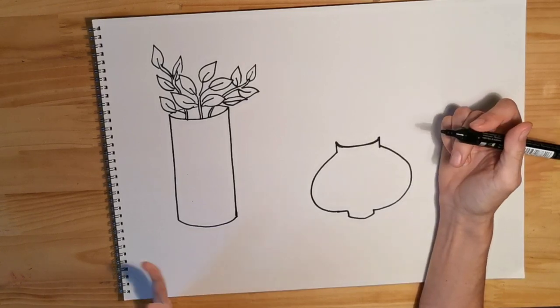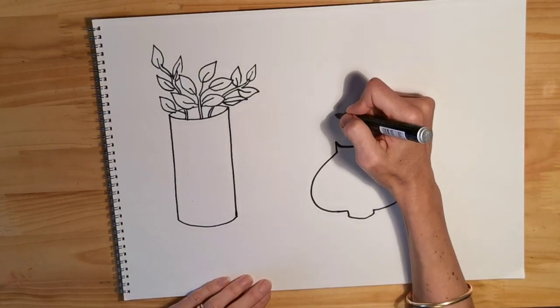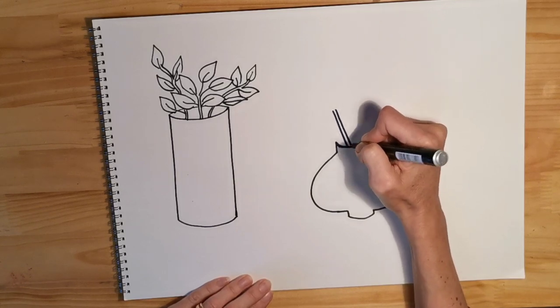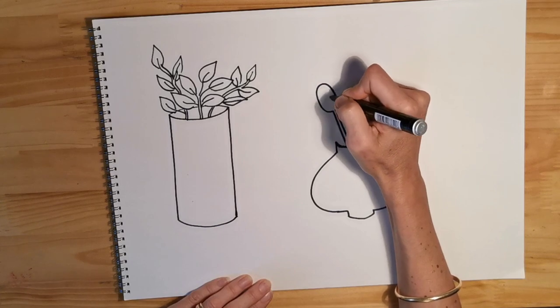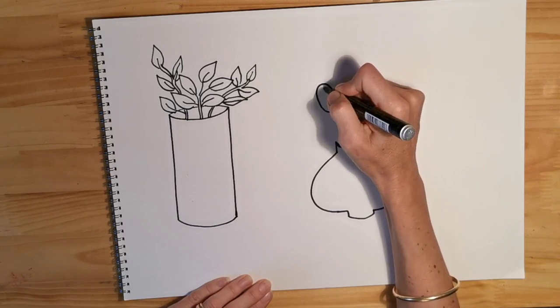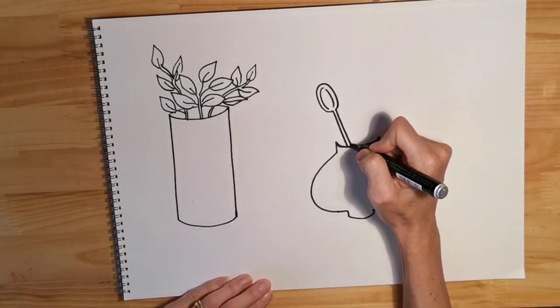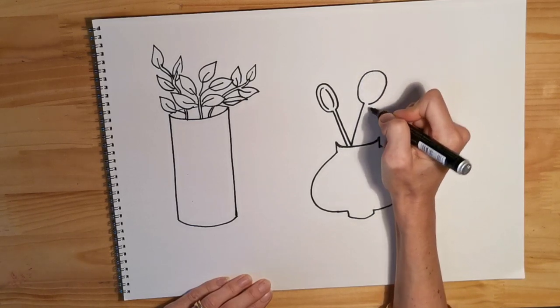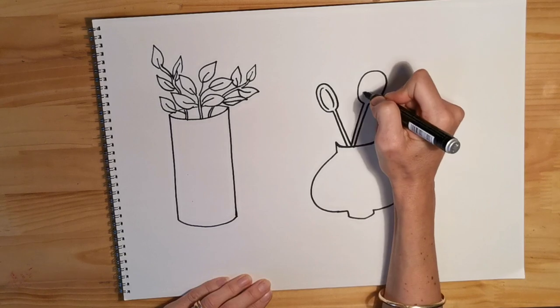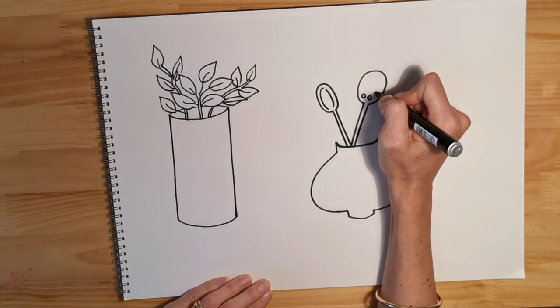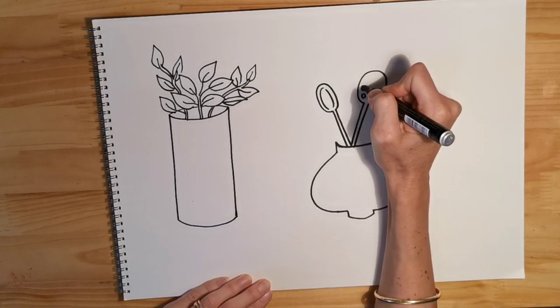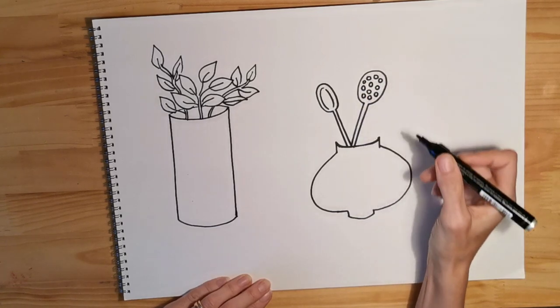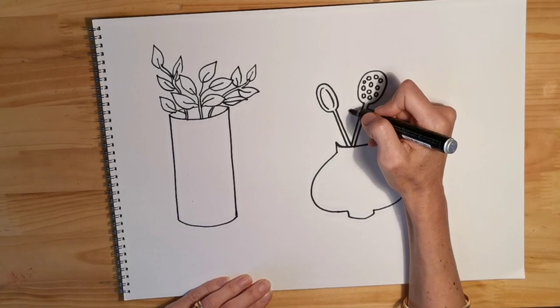And then I want to think about what could be in this container. It could be pens, pencils. Maybe this container is in my kitchen and it is containing lots of big spoons. I've got a big spoon there, maybe another spoon here. This could be one of those spoons that has holes in it - I've got some of those in my kitchen that you can drain the water out of.